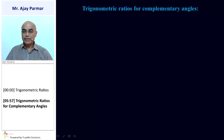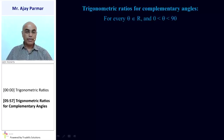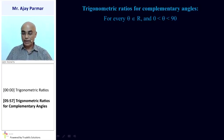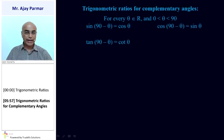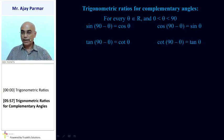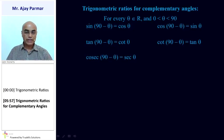For complementary angles, the trigonometric ratios can be defined for every theta which is an acute angle — that is between 0° and 90°. Then: sin(90° − θ) = cos θ, whereas cos(90° − θ) = sin θ. Similarly, tan(90° − θ) = cot θ and cot(90° − θ) = tan θ. Whereas cosec(90° − θ) = sec θ and sec(90° − θ) = cosec θ.